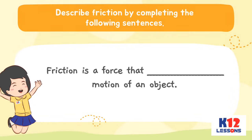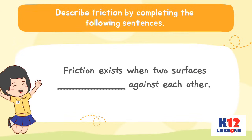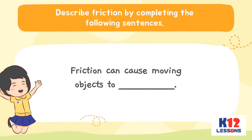Describe friction by completing the following sentences. Friction is a force that blank motion of an object. Friction acts blank to the direction of moving objects. Friction exists when two surfaces blank against each other. Friction can cause moving objects to blank.